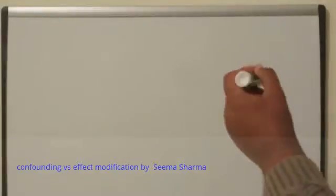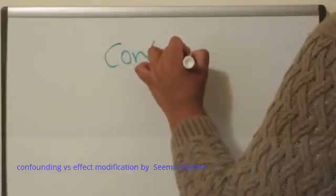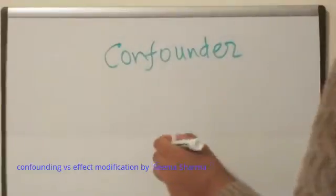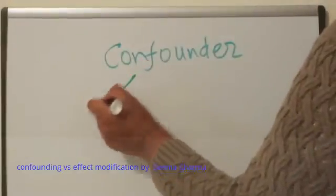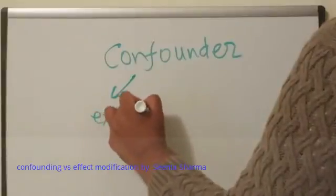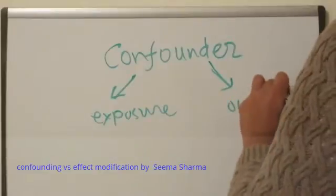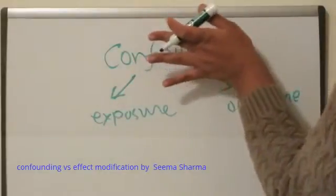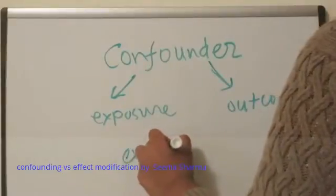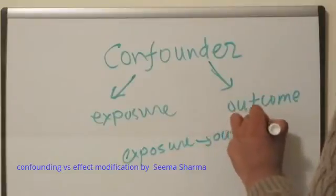A confounder is some kind of outside factor that has an independent relationship with the exposure and a separate relationship with the outcome, so that if you don't correct for it, it makes it look like there's an actual relationship between the exposure and outcome that's not really there.